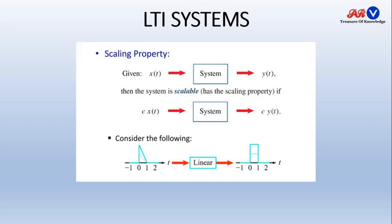Next is scaling property. Suppose we have a system giving input x(t) and producing output y(t). If the system is scalable and input is scaled by c, where c is a constant (greater than or less than 1), then the system must produce c·y(t). Whatever scaling you do at the input side, it must produce the same scaling at the output side. If you scale it to 2, output will also scale to 2; if you scale it to half, output also scales to half.